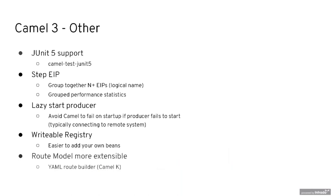Other important features introduced in CAMEL 3: JUnit 5 support, and the lazy start producer. The idea is to avoid CAMEL failing on startup if the producer fails to start — in CAMEL 2 we had a different approach with a phased startup, and in CAMEL 3 we changed this behavior.